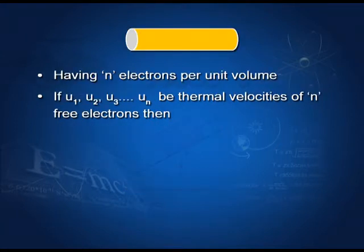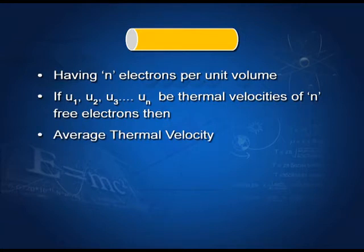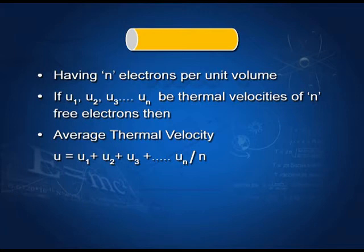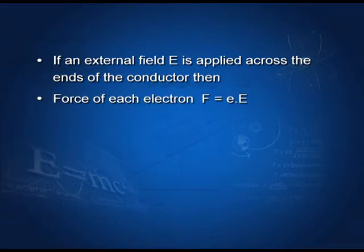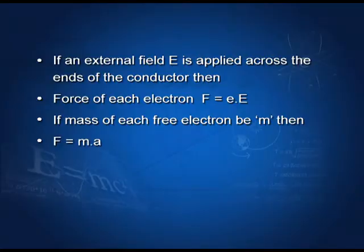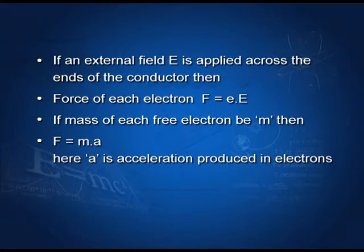If u1, u2, u3, ... un be the thermal velocities of n free electrons, then average thermal velocity u equals (u1 + u2 + u3 + ... + un) divided by n. If an external field E is applied across the ends of the conductor, then force on each electron F equals e (charge of electron) multiplied by the electric field E. If mass of each electron is m, then F equals mA by Newton's second law, where A is the acceleration produced in each electron.